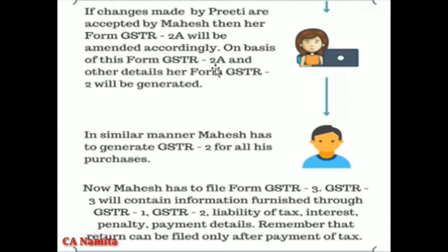On the basis of GSTR2A and other details, Ms. Preeti's GSTR2A will be generated from all her suppliers. The details will flow automatically into your purchase records. If there are some modifications to your purchase, you will use GSTR2A and GSTR1A. This is the return filing process. GSTR3 is the main return — GSTR1 is the output supply, GSTR2 is the inward supply, and the tax liability, interest, and penalty will be calculated. GSTR3 will then be prepared and you will be able to file your tax payment through GSTR3.